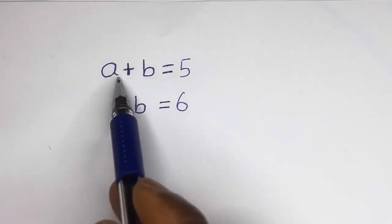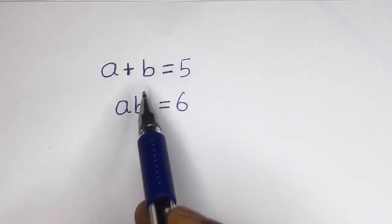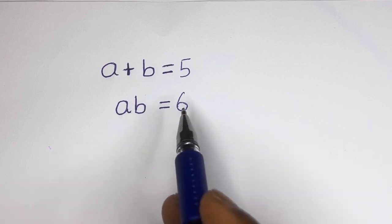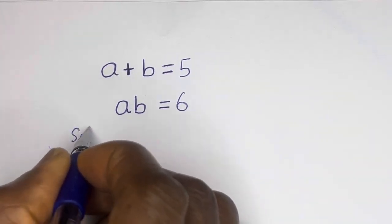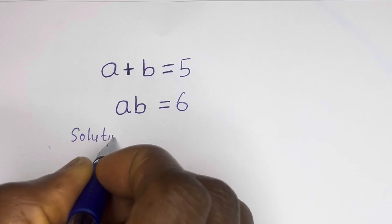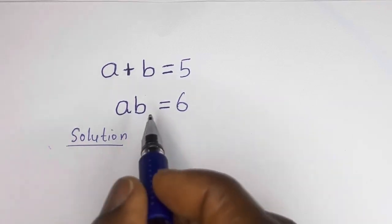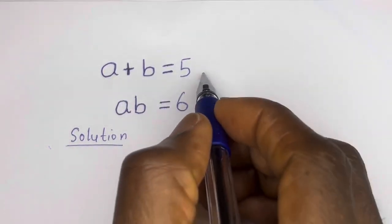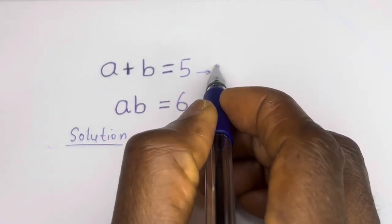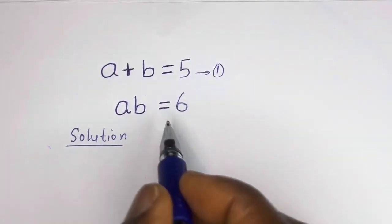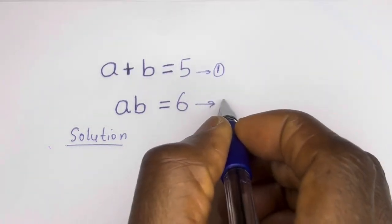Hello. How to solve for a and b in this equation: a plus b is equal to 5, and a times b is equal to 6. Solution. Let a plus b equals 5 — let's call this equation 1. And a times b equals 6 — let's call this equation 2.